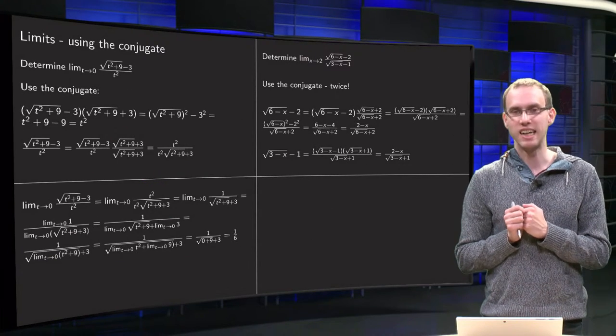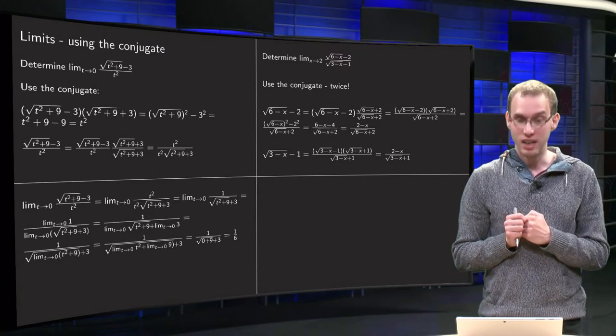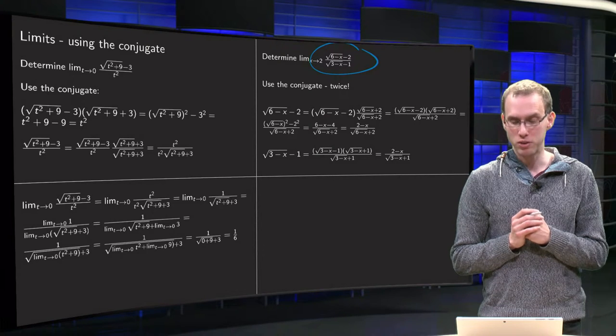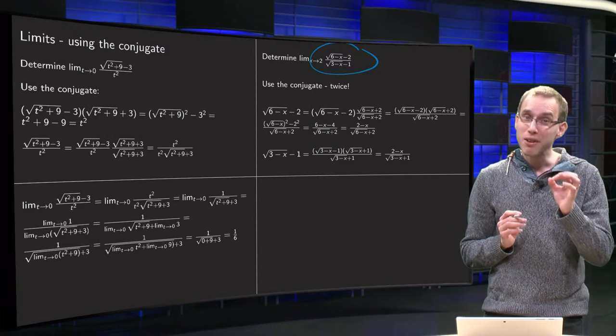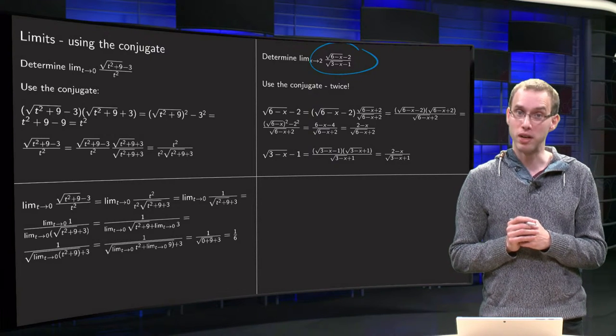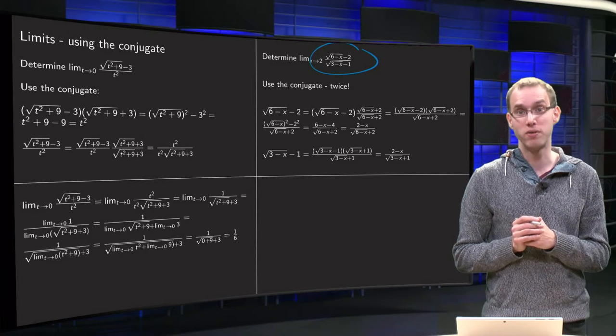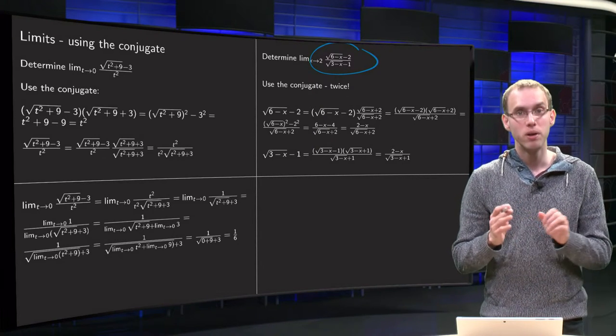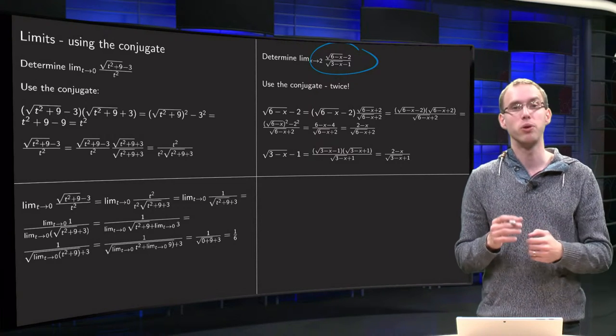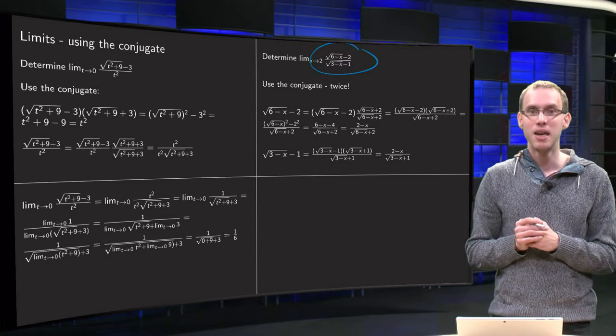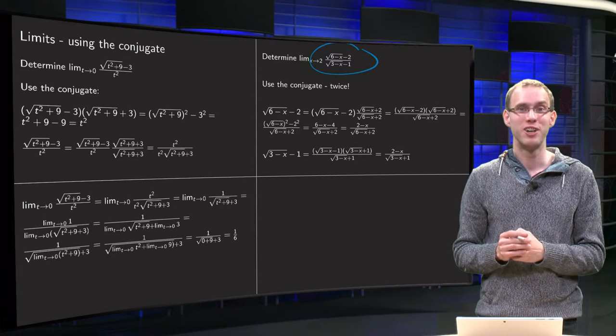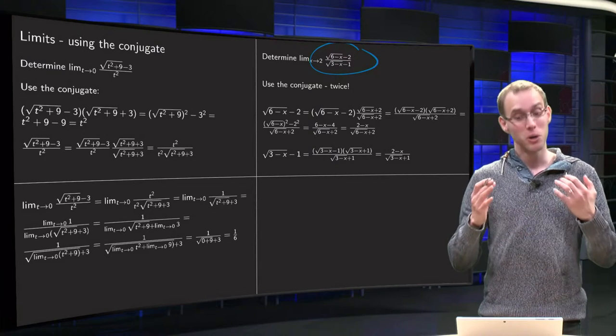On to a second example. This one looks really awkward. x to 2 of square root of 6 minus x minus 2 over square root of 3 minus x minus 1. If you would plug in x equals 2 directly, you get square root of 4 minus 2 equals zero over square root of 1 minus 1 equals zero. So again something like zero over zero. So you cannot plug it in directly. You cannot use all the rules like quotient rule, et cetera. But how can you apply the conjugate? Because you have basically two square roots. Well, that is fun. Two square roots, apply the conjugate twice.